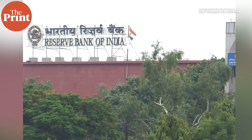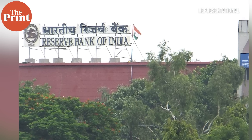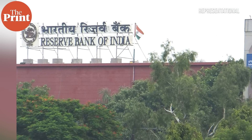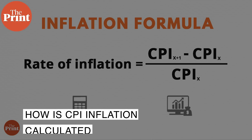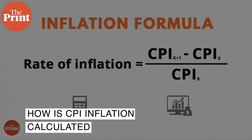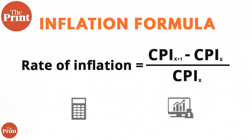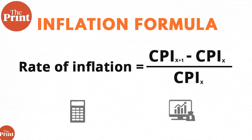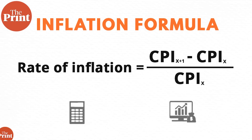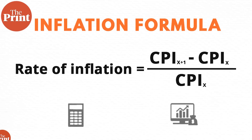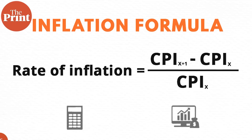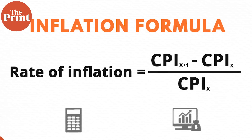The RBI in their last monetary policy statement said that the food basket is responsible for 75% of the increase in the inflation projections. The CPI is calculated with reference to a base year used as a benchmark. When you calculate the CPI, the price of the basket in one year is first divided by the price of the market basket of the base year, then multiplied by 100.